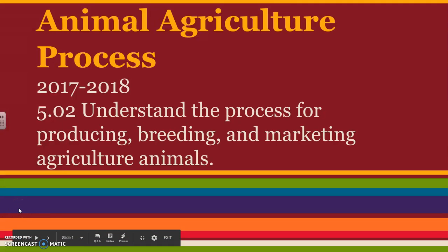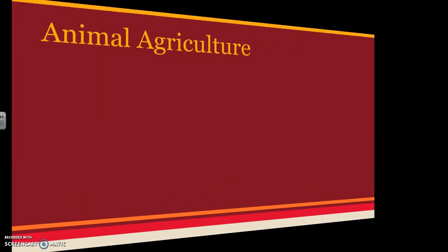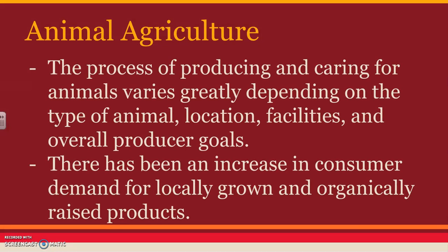This lesson is all on what I consider the animal agriculture process, or how we actually manage our animals depending upon which species we're managing. Animal agriculture as a whole is the process of producing and caring for animals, and that really is going to vary depending on the type of animal you're raising, the species, the location where you are, what facilities you have access to, and your overall producer goals.